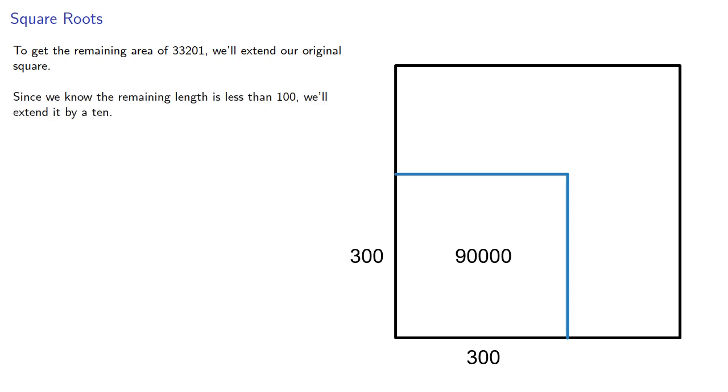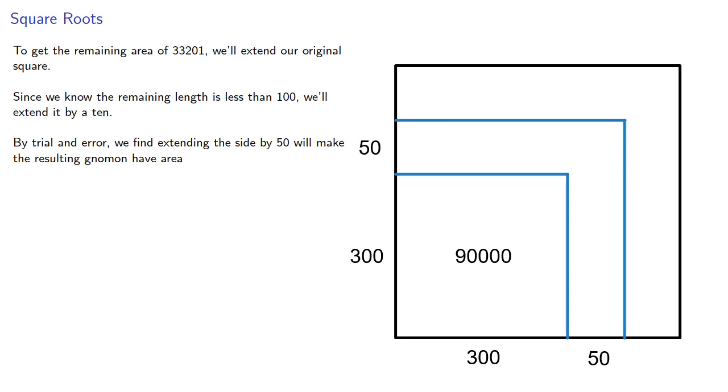Since we know the remaining length is less than 100, we'll extend it by a 10. By trial and error, we find extending the side by 50 makes the resulting gnomon have area 2(300)(50) + 50² = 32,500. You can think of this as two 50 by 300 rectangles plus a square of side 50.